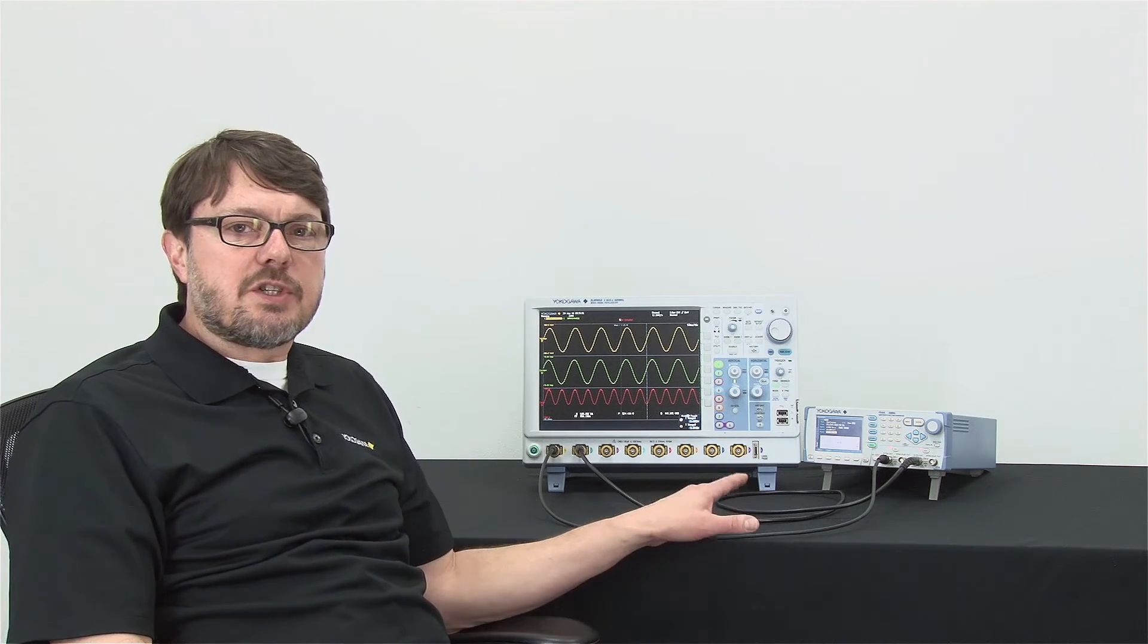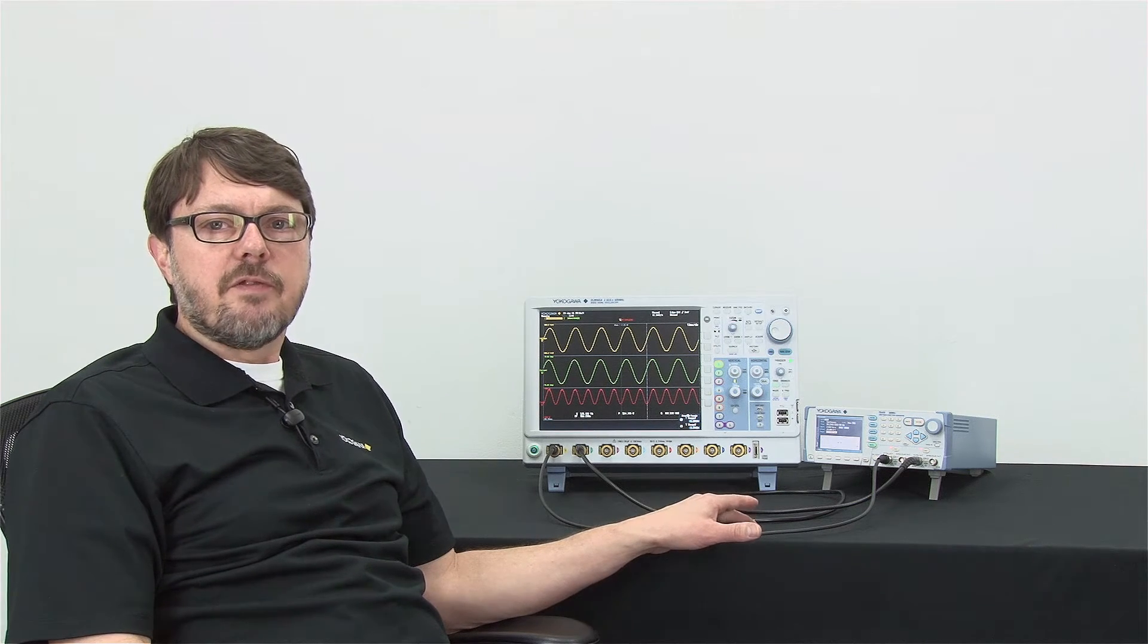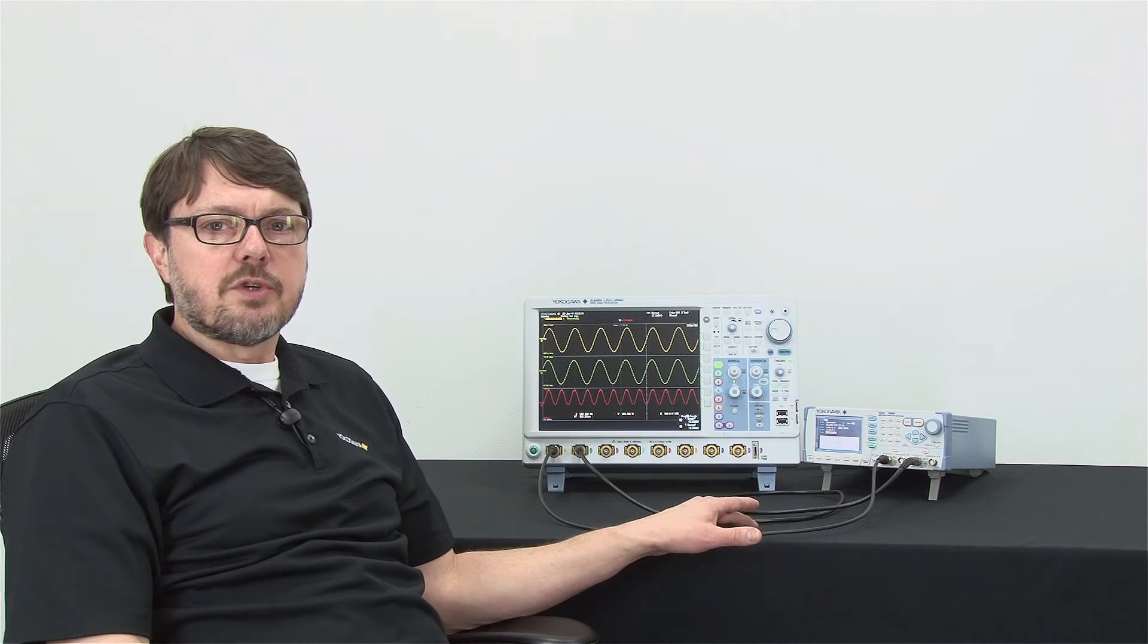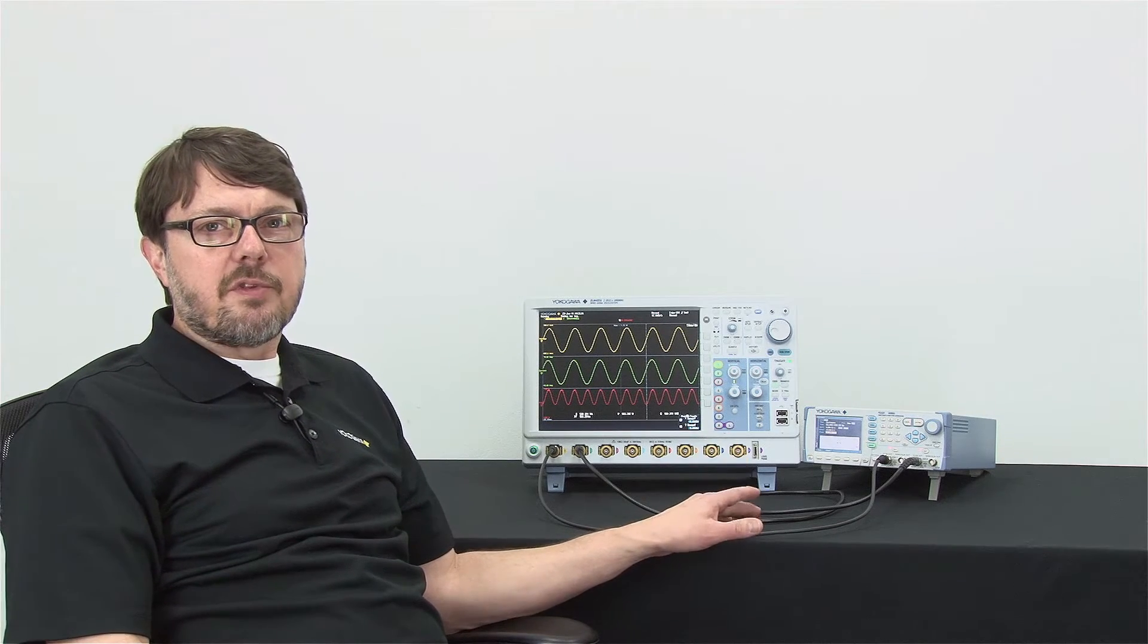I have set up here a function generator which is providing a pair of waveforms to the oscilloscope, simulating a voltage waveform on channel 1 and a current waveform on channel 2. Let's get started with the demonstration.